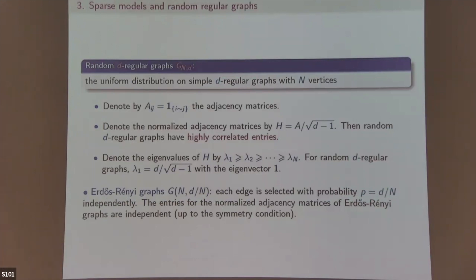When d is very small the Erdős-Rényi graph starts to become disconnected and there are some problems. For very sparse matrices you often want to look at the regular graph instead. Now the next topic is the random Schrödinger equation.